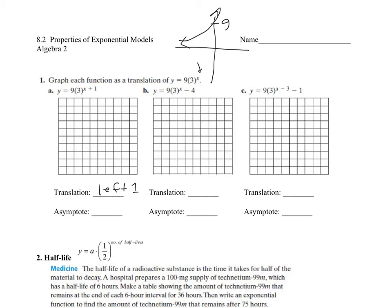And what an asymptote is, is a line that a function gets very close to but never crosses. So if my rough sketch is going to look like instead of having a y-intercept of 9, this one, if it's moved over to the left one, if you plug in 0 for x, the y-intercept is going to be 27.